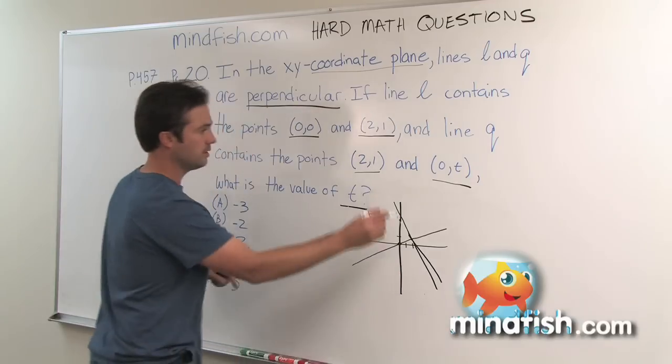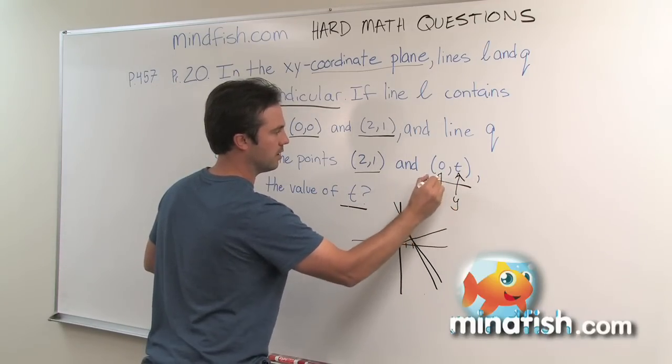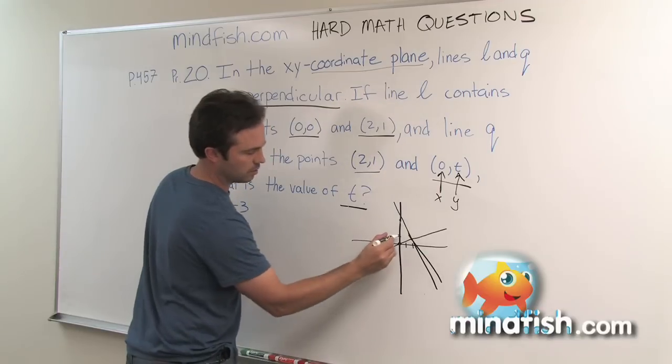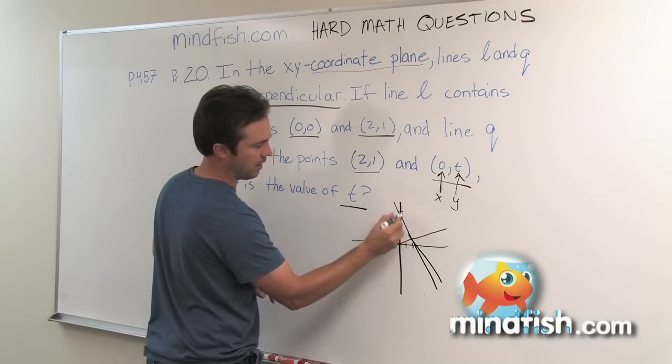So now they're asking us what is the y value when the x value is zero. So one, two, three, four. So it looks like somewhere between four and five.